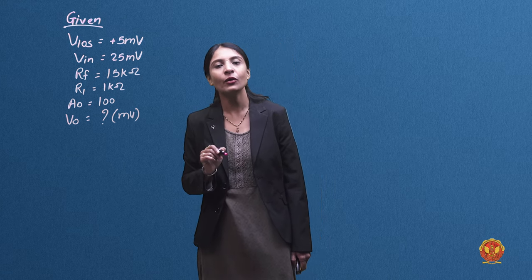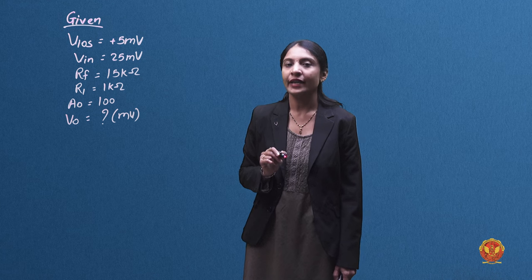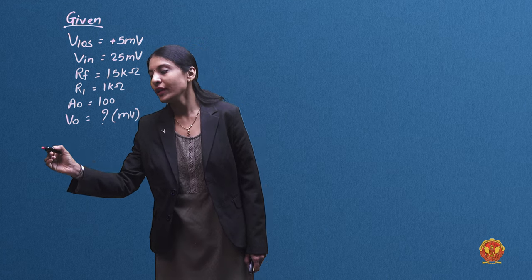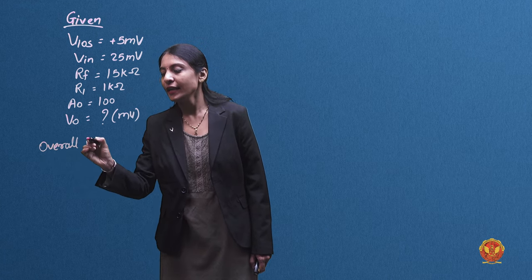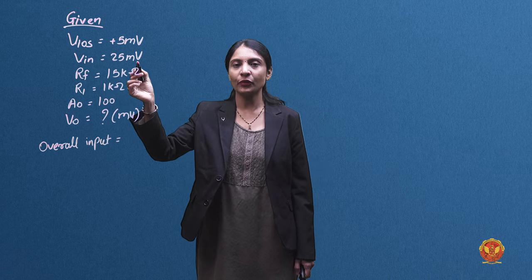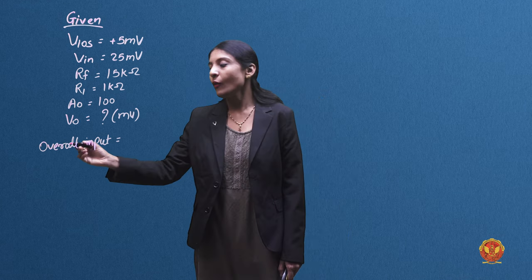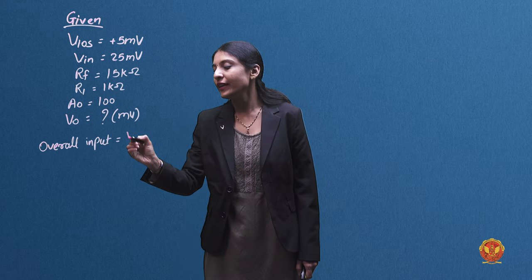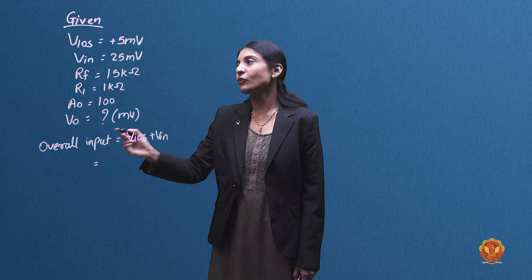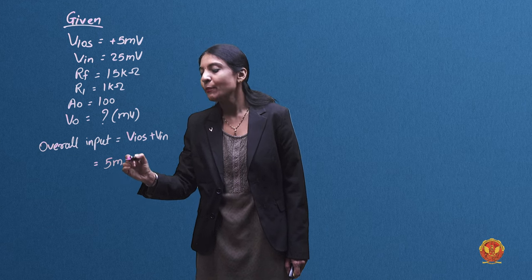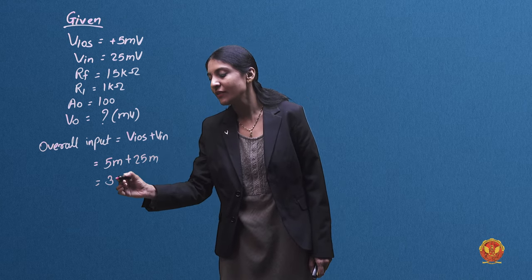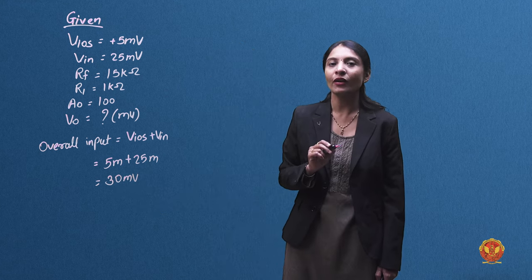We have to calculate the output voltage in millivolts. First, we find the overall input. There are two inputs: one is the input offset voltage and one is the input voltage Vin. The total input voltage is Vios plus Vin, which is 5 mV plus 25 mV, giving an overall input of 30 mV.